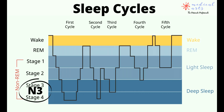Four to five cycles occur during a typical eight-hour night of sleep. Young adults typically sleep approximately eight hours per night with a high percentage of stage N3 sleep. As humans transition to middle age and beyond, the percentage of N3 decreases and the percentage of wake and N1 increases.